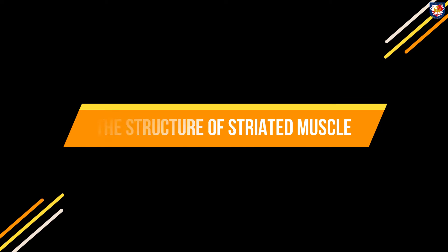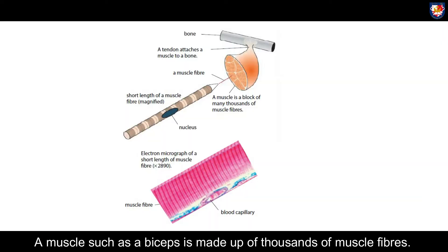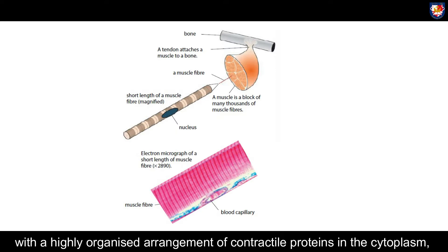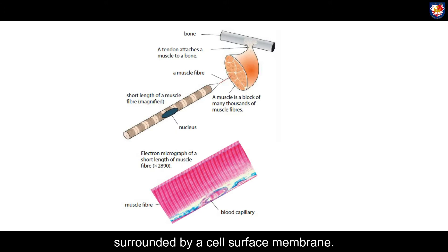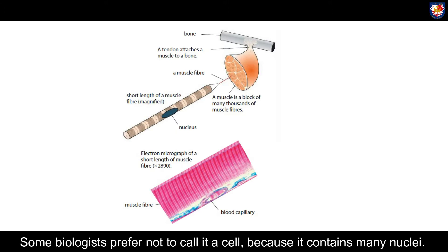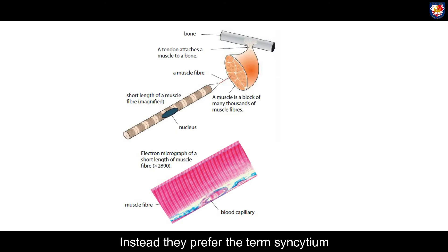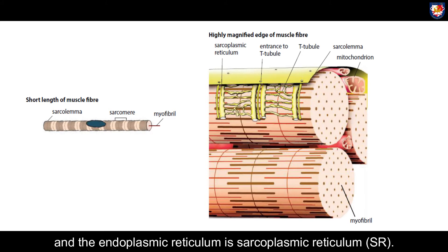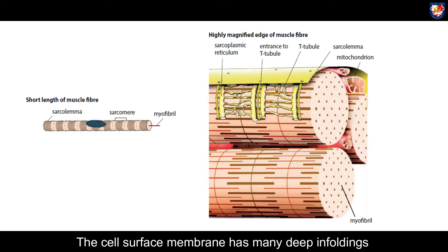Structure of striated muscle: a muscle such as the biceps is made up of thousands of muscle fibers. Each muscle fiber is a very specialized cell with a highly organized arrangement of contractile proteins in the cytoplasm, surrounded by the cell surface membrane. Some biologists prefer not to call it a cell because it contains many nuclei; instead they prefer the term syncytium to describe the multi-nucleated muscle fiber. The cell surface membrane is called the sarcolemma, the cytoplasm is the sarcoplasm, and the endoplasmic reticulum is the sarcoplasmic reticulum, or SR.